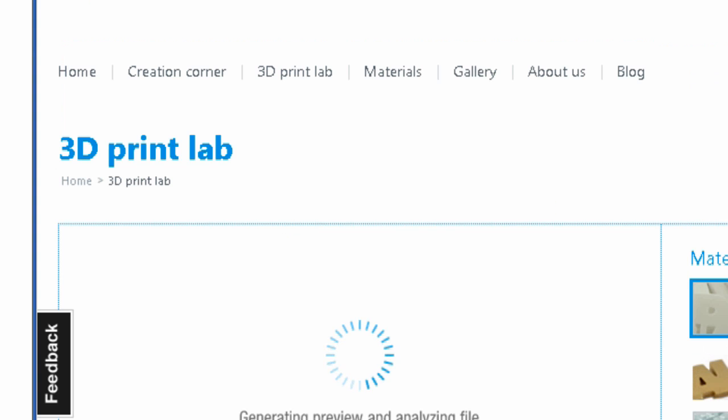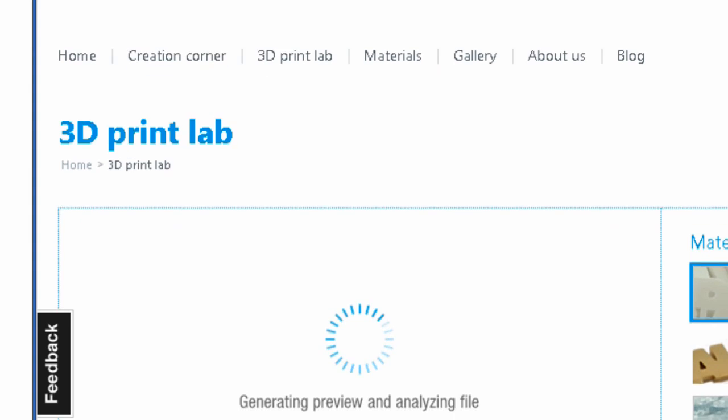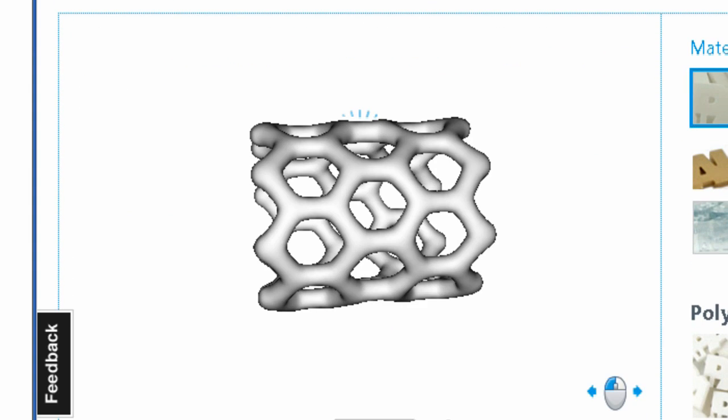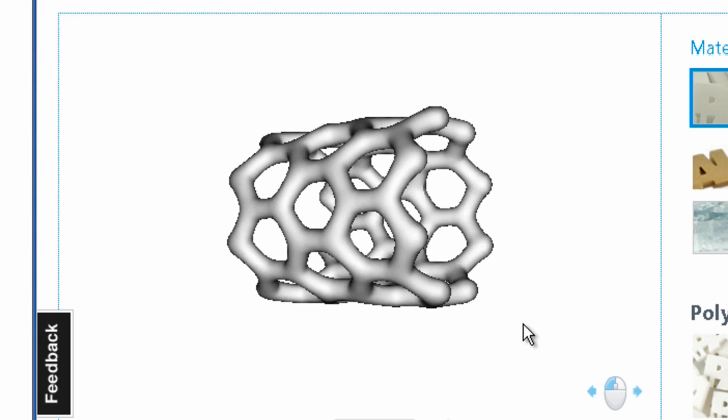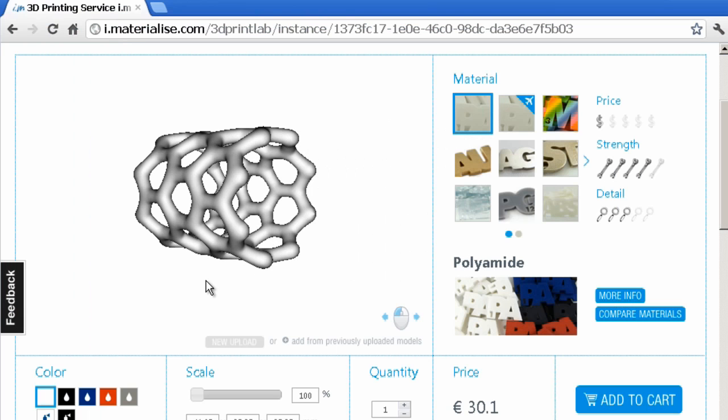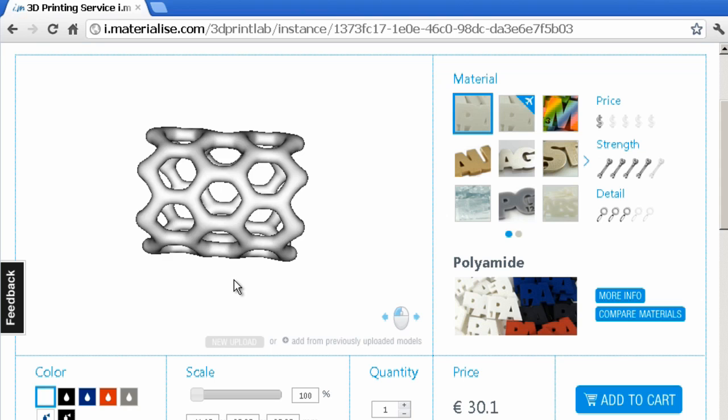The model is uploaded and it's now just generating a preview and there we are. We have a preview and exactly the same model as we've just seen which I can move around. You can tell I've managed to transfer a model from Lightwave into the iMaterialize system.